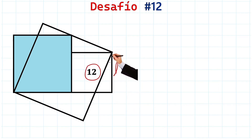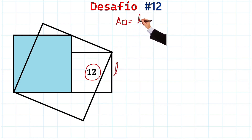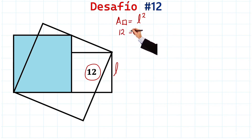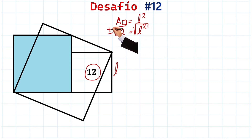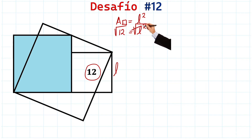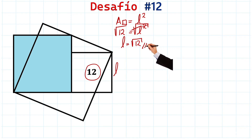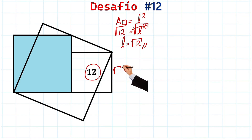Let's start by finding the side of this small square. We know that the area of a square is equal to the side squared. So the area of this square is 12, and this is going to be equal to the side squared. To find the side, we take the square root of both sides of the equation and disregard the plus-minus because we only want the positive part as we are talking about distances. We simplify, and the side is equal to the square root of 12. We already have the side of this square here — it's the square root of 12. From here to there it's also the square root of 12.